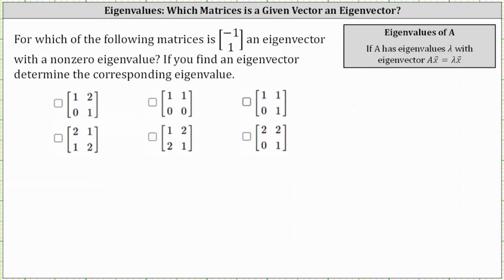For which of the following matrices is the vector (-1, 1) an eigenvector with a non-zero eigenvalue? If you find an eigenvector, determine the corresponding eigenvalue. If the vector (-1, 1) is an eigenvector for the given matrix, then the matrix times the vector (-1, 1) must be equal to lambda — some scalar — times the vector (-1, 1). So to answer the question, we'll determine the product of each of the given matrices and the vector (-1, 1) to see if the result is a scalar multiple of the vector (-1, 1).